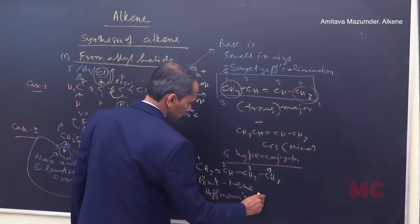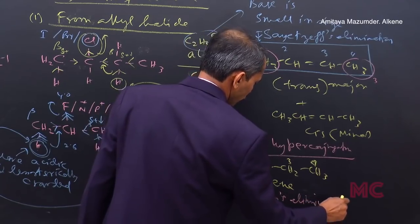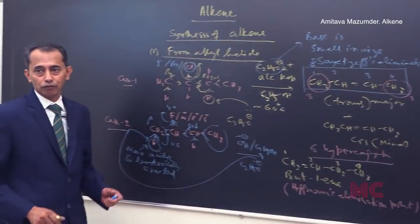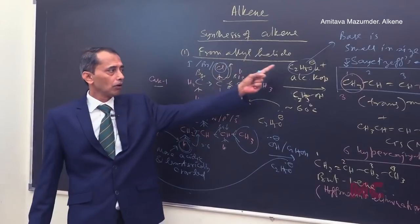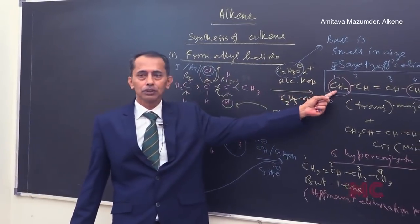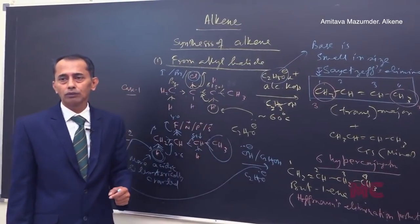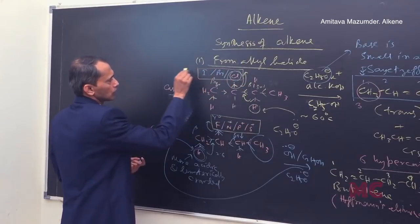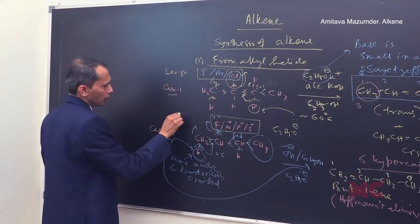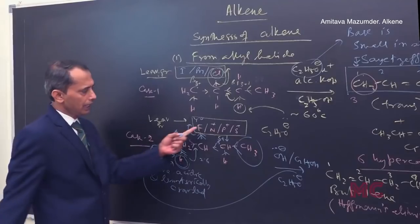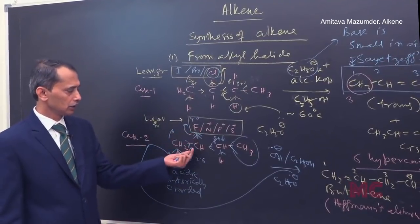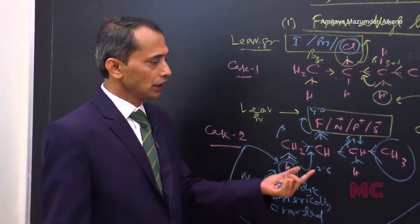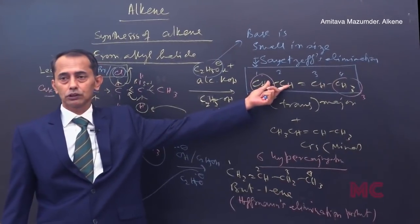This kind of product is called Hofmann's elimination product. So you need to understand: when does Hofmann's elimination take place and when does Saytzeff's? Clearly, if the leaving group is Cl, Br, or I with a small base, you get the Saytzeff elimination product based on hyperconjugation stability. When the leaving groups are F, N+, P+, or S+, their high electronegativity makes the beta hydrogen very acidic, and you get a terminally located alkene — i.e., Hofmann's elimination product.